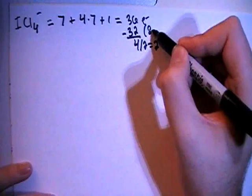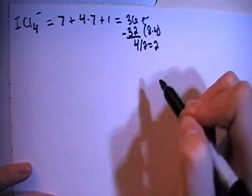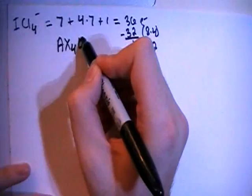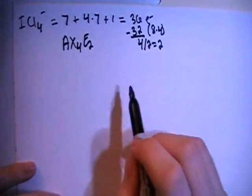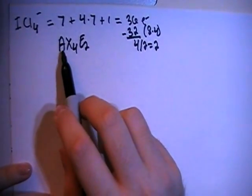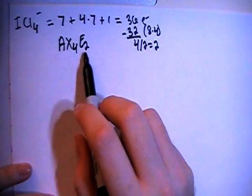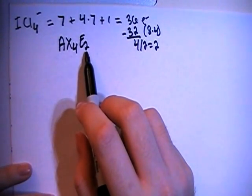And since 32 is equal to 8 times 4, that means that this structure will be an AX4E2 structure. Meaning there's a central atom surrounded by 4 peripheral atoms and the central atom also has 2 non-bonding pairs of electrons.